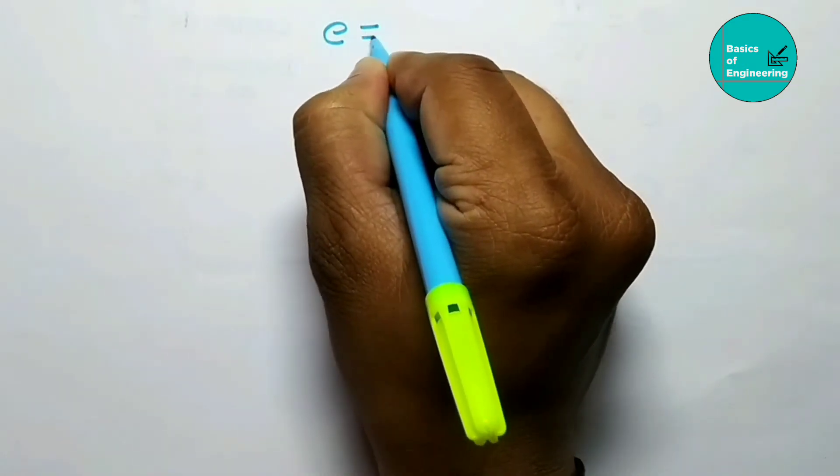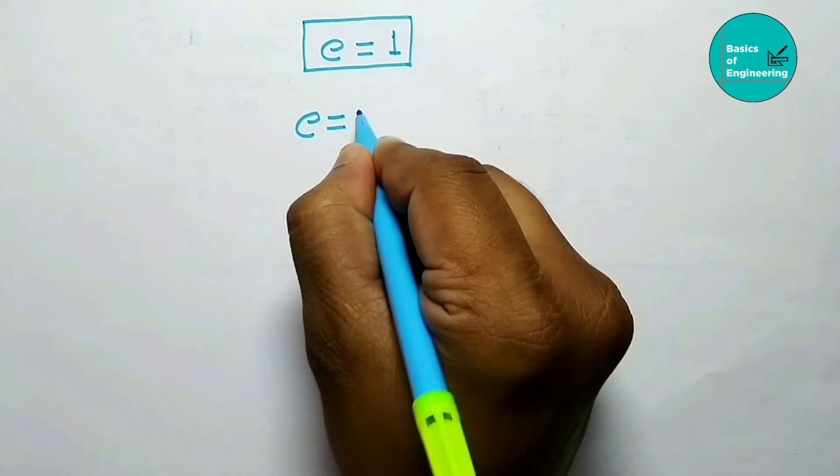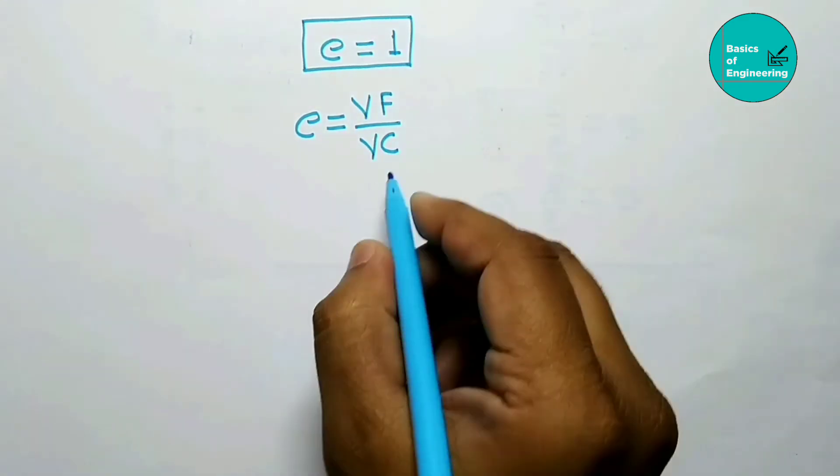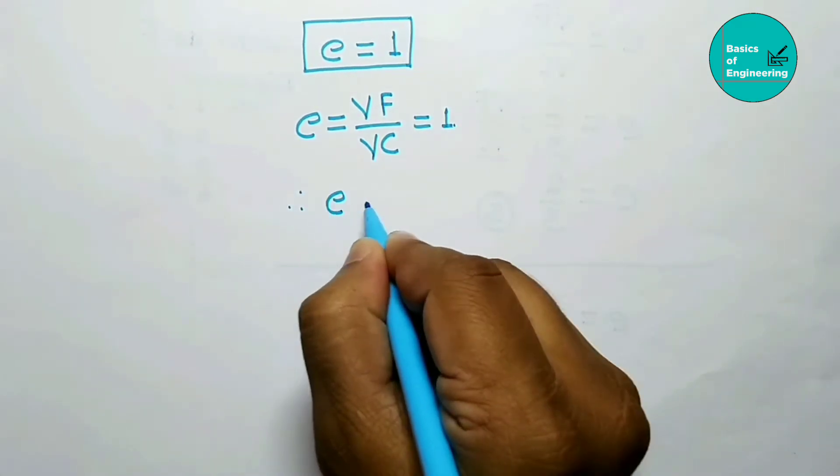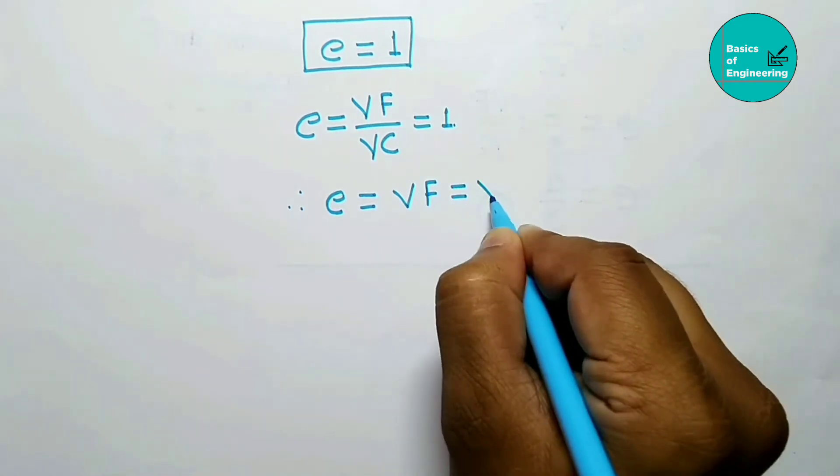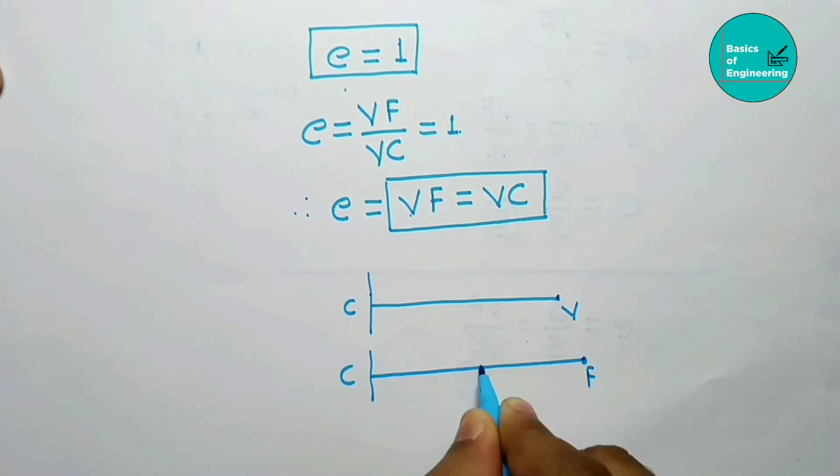Eccentricity E is equal to 1, so Vf upon Vc equals 1, meaning Vf equals Vc. So whatever the distance between C and focus point, the vertex point is always at the center.